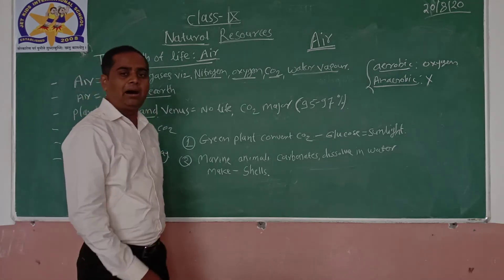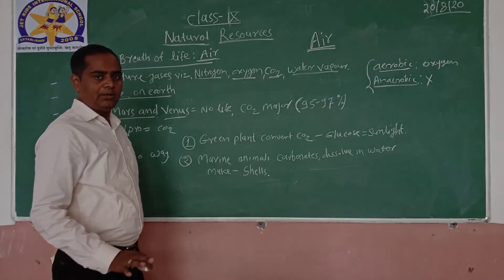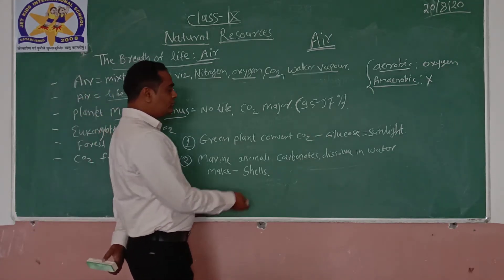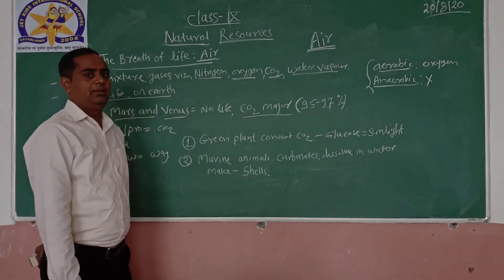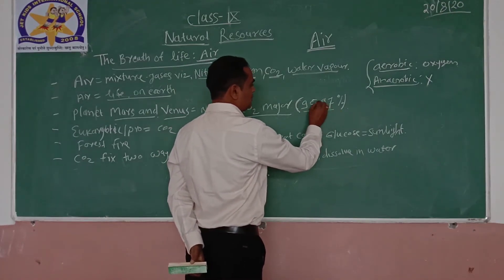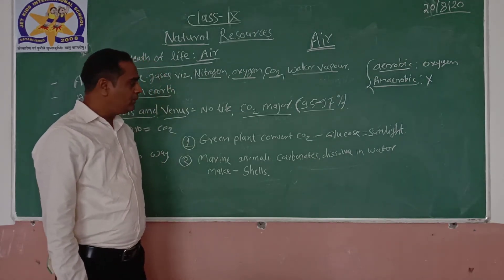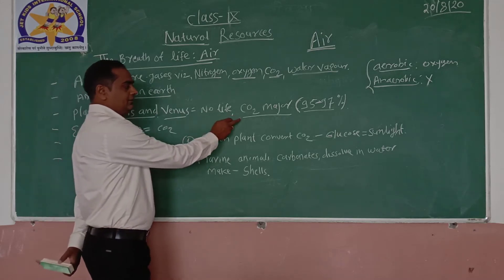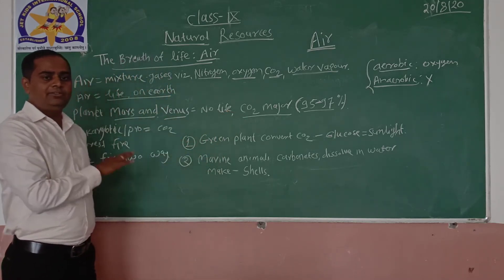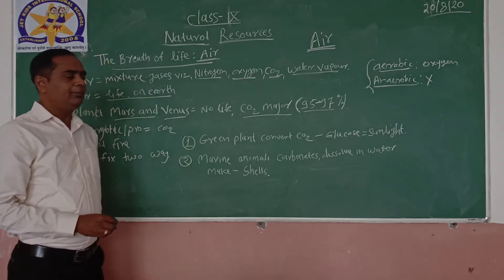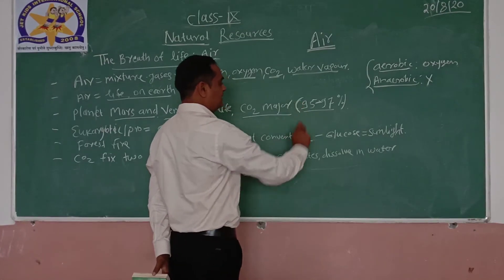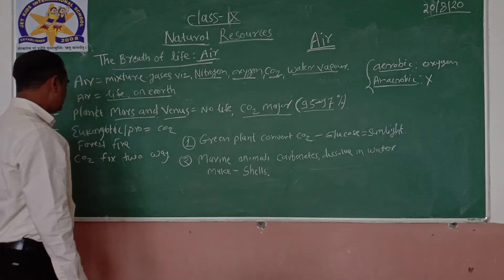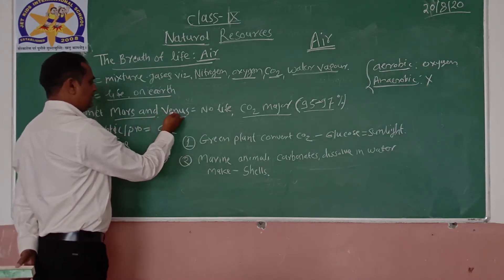On other planets like Mars and Venus there is no life. The major component available on Mars and Venus is carbon dioxide, which ranges from 95 to 97 percent CO2 content on those planets. There is air available but there is no life on Mars and Venus because the major component is carbon dioxide at such a high percentage.